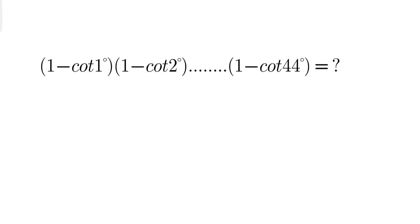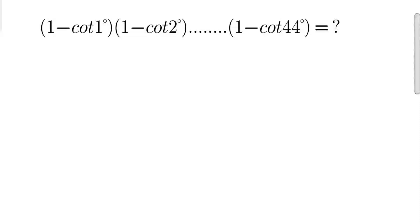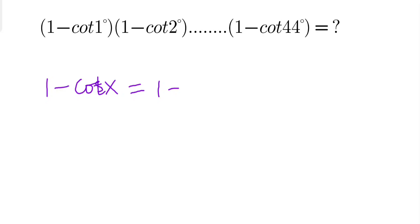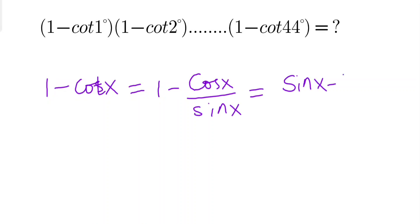I am going to take one general term, that is (1 - cot x). So what happens if I take this? I can write 1 minus cos x over sin x, and therefore this becomes (sin x - cos x) / sin x.